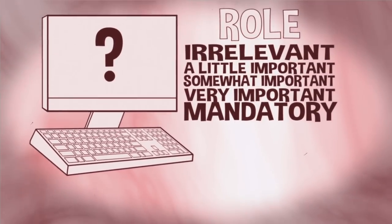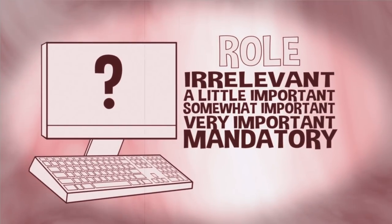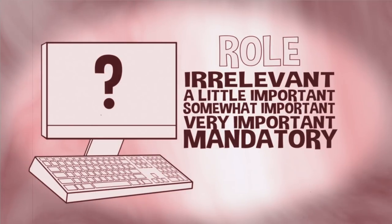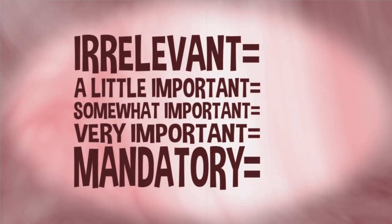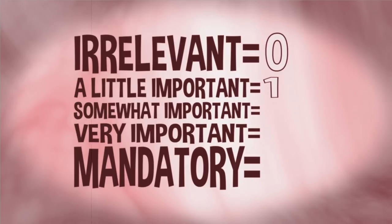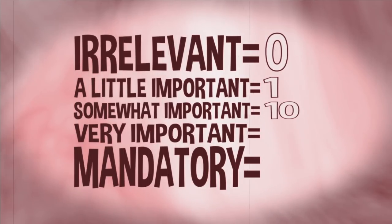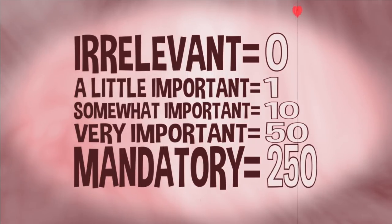Our first step is to assign numerical values to ideas like somewhat important and very important, because computers need everything in numbers. At OkCupid we decided on the following scale: irrelevant is worth 0, a little important is worth 1, somewhat important is worth 10, very important is 50, and absolutely mandatory is 250.